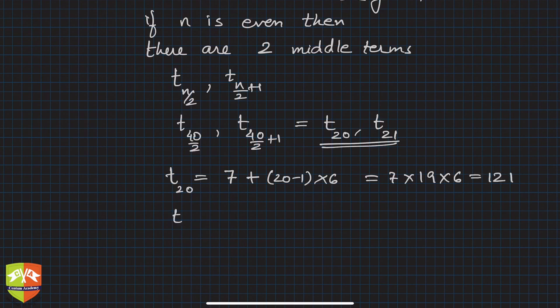Now t 21 will be 7 plus 21 minus 1 times 6, which will be equal to 7 plus 20 times 6, that is 127.